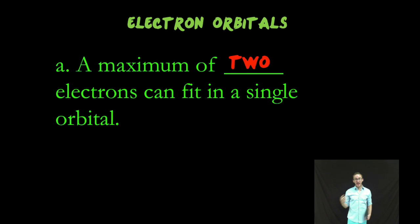Turns out, electrons like to spin. And there are two ways you can spin. Clockwise. Counterclockwise. And it turns out that by spinning in opposite directions, you can get two like charges in the same general region of space.